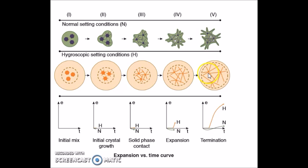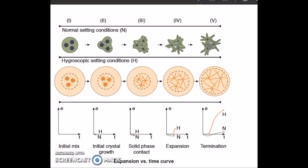This leads to more expansion of the gypsum product compared to normal setting conditions. This added expansion, which happens when the gypsum products are immersed in water, is called hygroscopic setting expansion. There is not much intermingling of crystals as in normal setting expansion, because as the crystals use the water of the mixture, more water is being added from the surroundings in which the mixture is immersed. Hence the crystals can freely grow, resulting in more expansion.